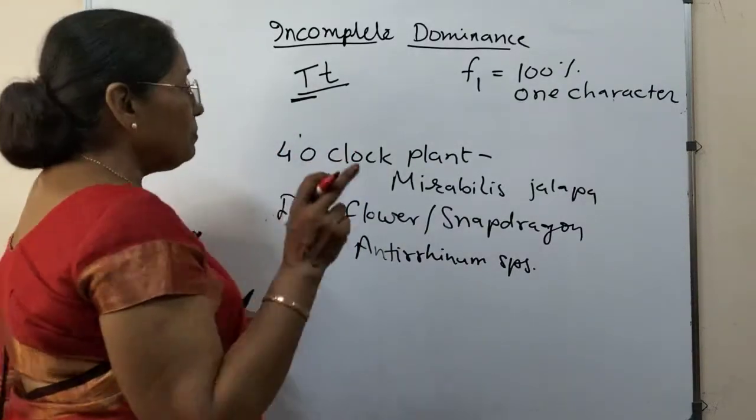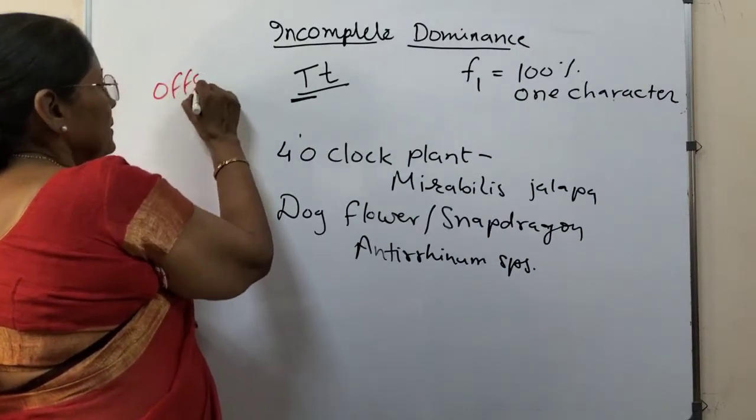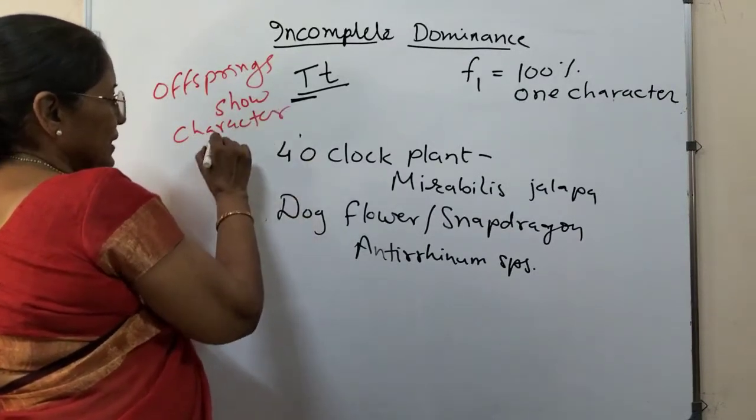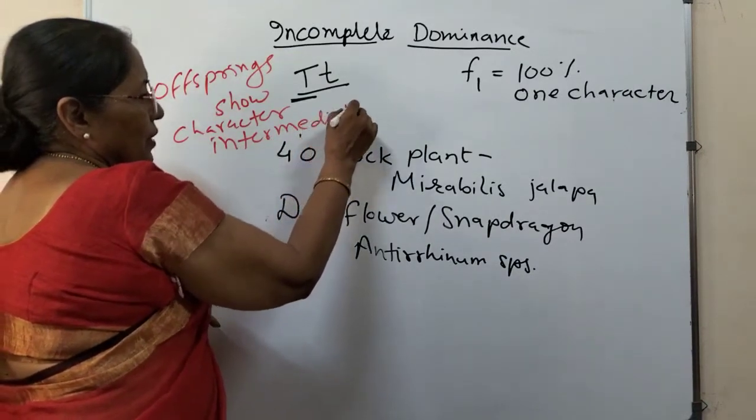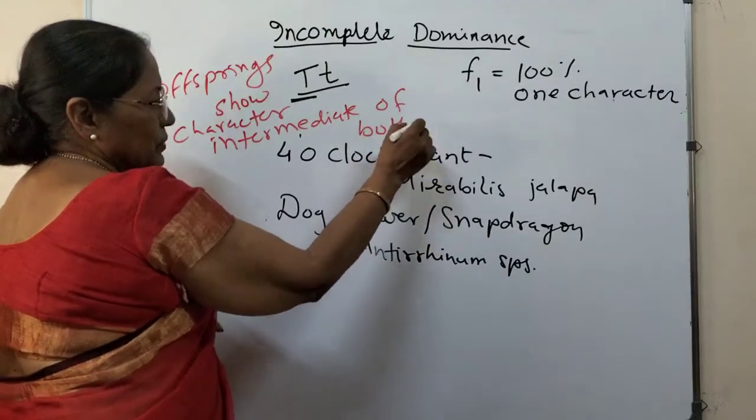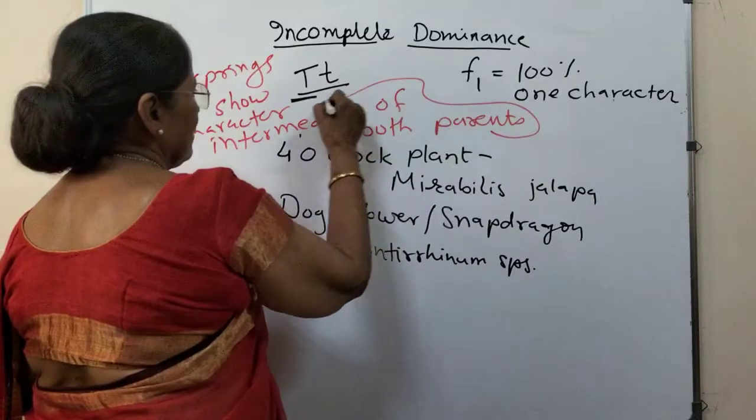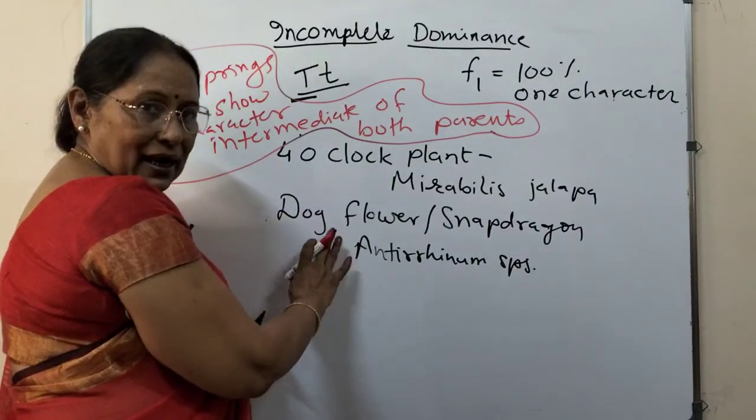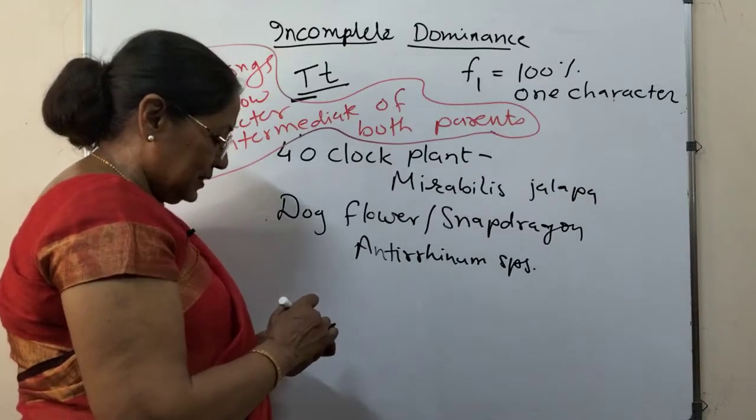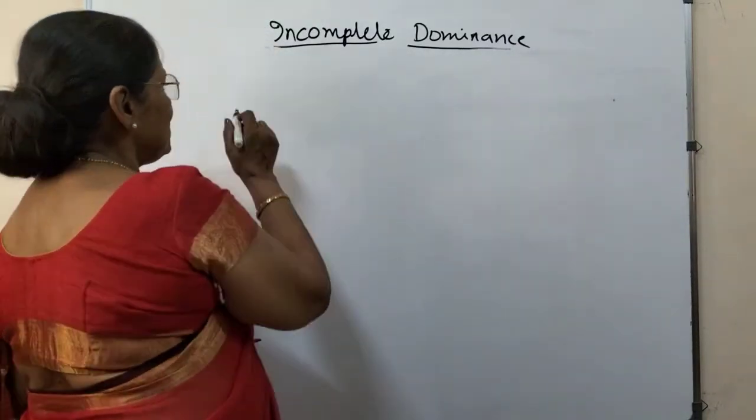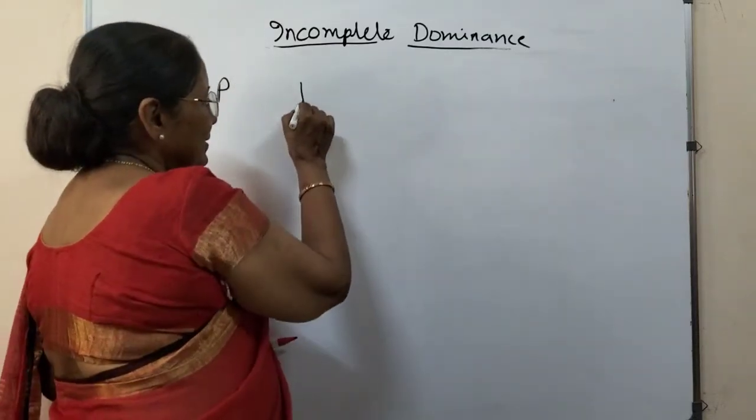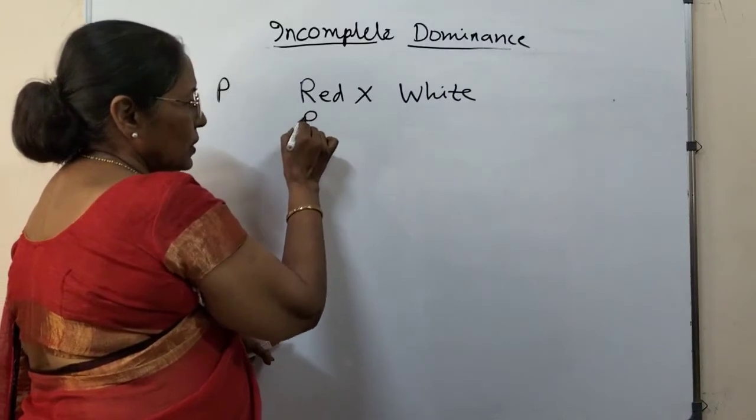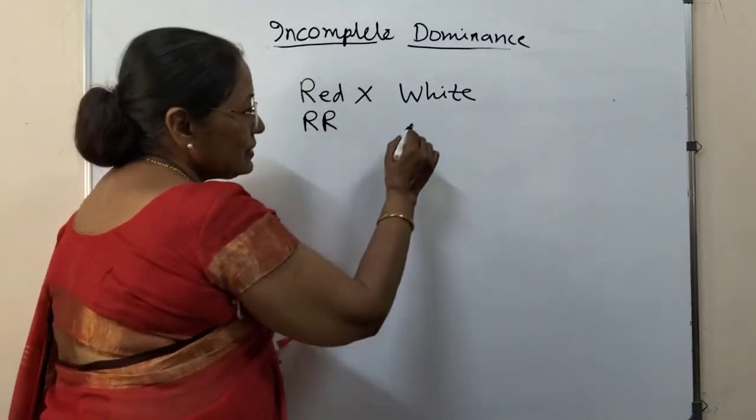So in incomplete dominance, the offspring show a character which is intermediate of both the parents. Let us draw the cross for the Antirrhinum plant, red and white flower. This snapdragon plant has two types of flowers—one is red, other is white. This is pure, this is also pure.